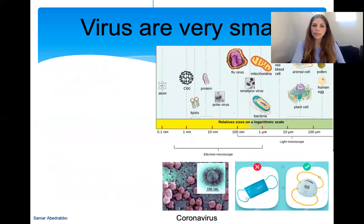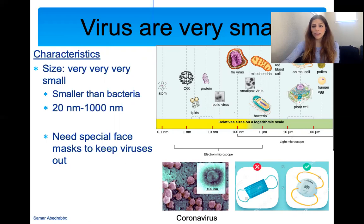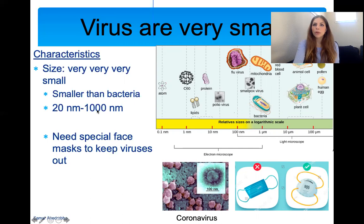Viruses are very, very small — smaller than bacteria. Think about how small bacteria are when we looked at them under the microscope using brightfield microscopy; viruses are even smaller. You cannot use a regular brightfield light microscope to look at viruses — you need a much fancier microscope with higher resolution. Bacteria are typically measured in micrometers or microns, while viruses are measured in nanometers, which is a thousand times smaller than a micrometer. Viruses range from 20 to a thousand nanometers.